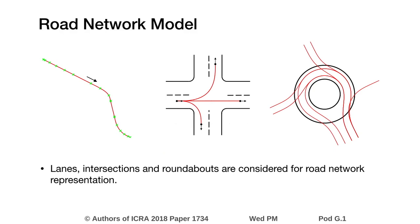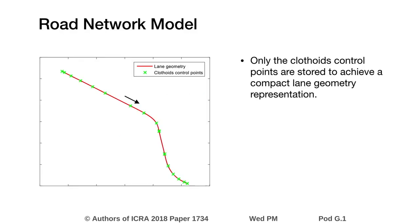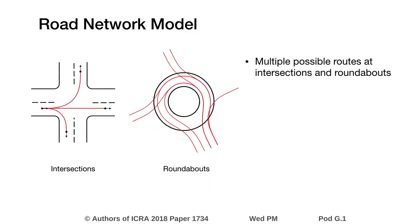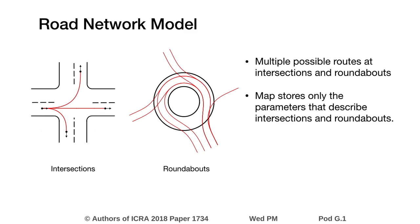which has direct influence on passengers' comfort. Lanes, intersections, and roundabouts are used to represent the road network. Lane geometry is represented by control points, which significantly reduces the amount of data necessary to represent all lanes on the map when compared to storing GPS points. There are multiple possible routes at intersections and roundabouts, so instead of storing control points, only the geometric parameters that describe those urban elements are stored.